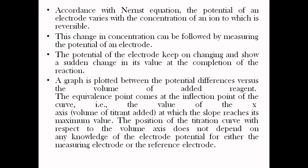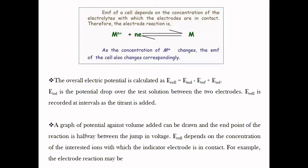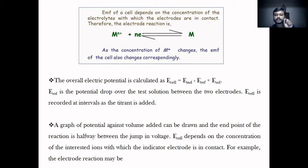From the normality equation, that type of titration is known as potentiometric titration. If a metal ion undergoes oxidation or reduction — for example, M^(n+) + n electrons gives M — as the concentration of M^(n+) changes, the EMF of the cell also changes accordingly. The overall cell potential is calculated as: E_cell = E_indicator - E_reference + E_solution, where E_solution is the potential drop of the test solution between two electrodes. E_int stands for the electrode potential of the indicator electrode, and E_reference stands for the electrode potential of the reference electrode.